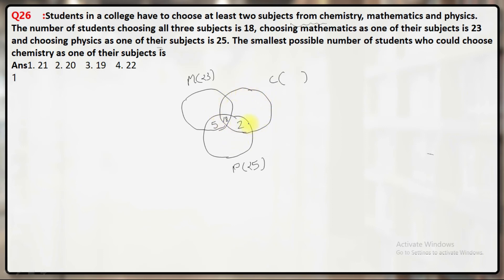Now if you try to minimize this circle, the minimum possible value of this circle will be 18 plus 2, that is 20. So my answer is the second option.